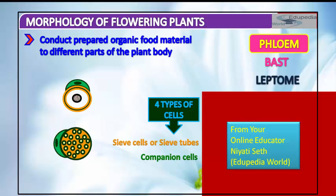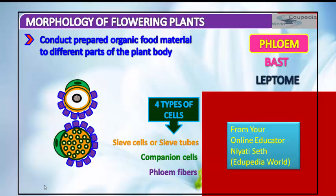Companion cells are specialized parenchymatous cells which are closely associated with sieve tube elements. Phloem fibers are also known as bast fibers; they are made up of sclerenchyma cells — that is, dead cells. These are generally absent in primary phloem but found in secondary phloem. They are much elongated, unbranched, and have pointed needle-like apices. The cell wall of phloem fibers is quite thick.